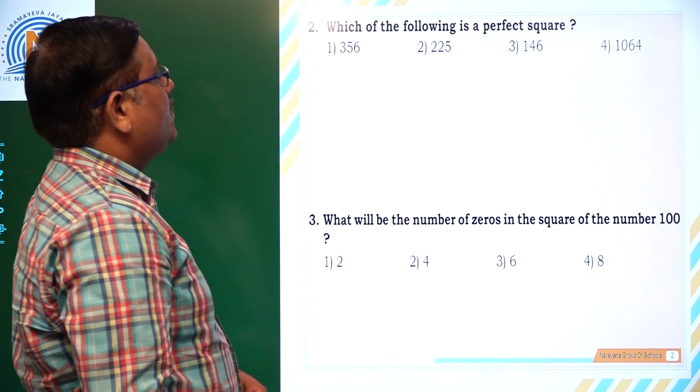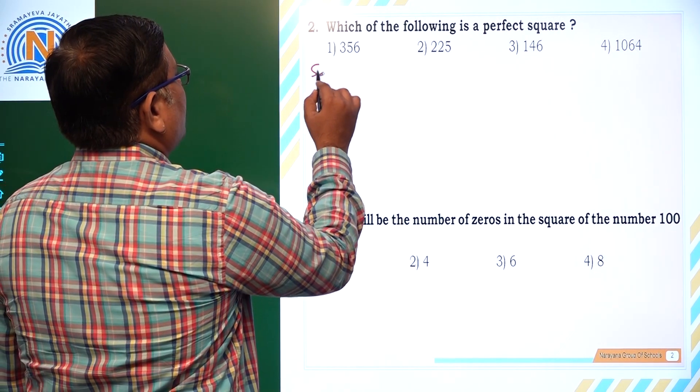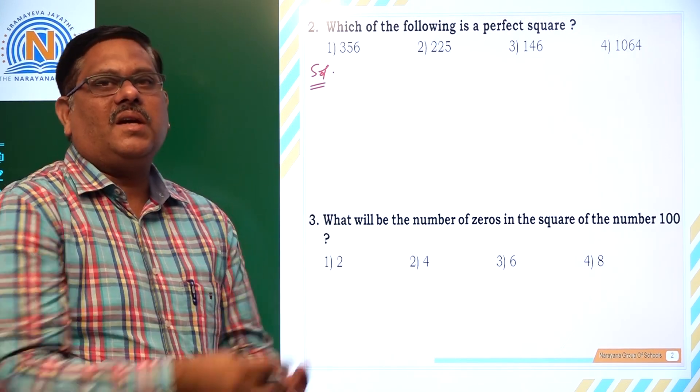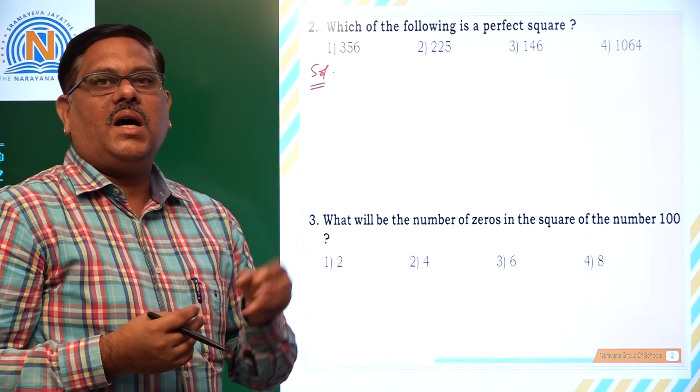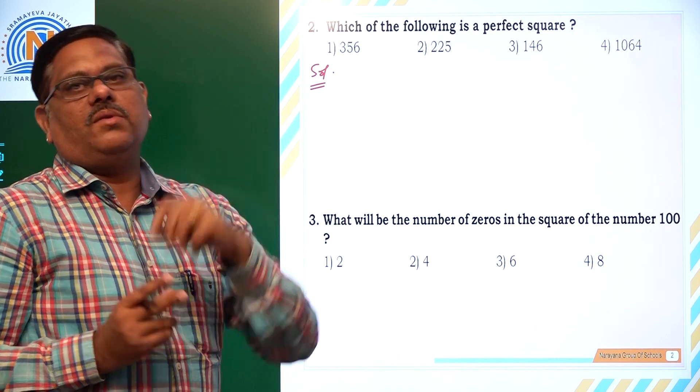Let us take the next question. Which of the following is a perfect square? If you look at 356, 225... perfect square means what? If you write its standard form, each of the primes must have even powers. If the bases have even powers, then certainly that will be a perfect square.